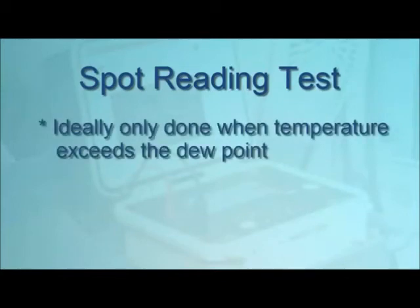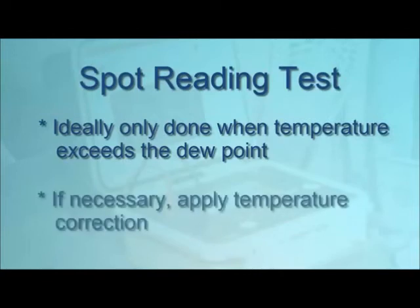To ensure your results are valid, spot testing should ideally only be performed on systems with temperatures exceeding the dew point. If tests are performed at different temperatures, carefully record the temperature of each test and apply the appropriate correction to determine what the resistance would be if the tests were performed at 20 degrees Celsius or 60 degrees Fahrenheit.